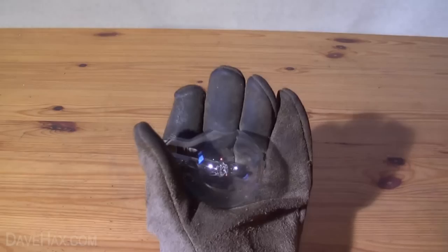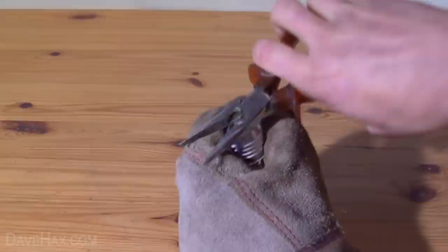We're going to start by putting on eye protection and a thick safety glove. Then take a firm grip of the bulb and using some pliers remove the contact at the end of it.